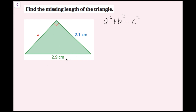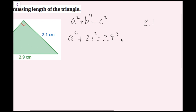I know my hypotenuse is 2.9 centimeters, so that's what I'll plug in for C. It doesn't matter which one I plug in for A or B — I'll leave the unknown as A and plug 2.1 in for B. So I get A squared plus 2.1 squared equals 2.9 squared. Doing 2.1 times 2.1: I get 4.41.